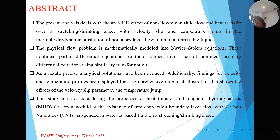This is the abstract. In the abstract, what we present in the current work is the MHD effect of non-Newtonian fluid flow and heat transfer over a stretching and shrinking sheet with velocity slip and temperature jump in the thermodynamic attribution of the boundary layer. We solve the problem using a similarity variable, converting partial differential equations to ordinary differential equations, and analyze results analytically using mathematical methods, finding velocity and temperature profiles represented in graphical illustrations. The aim is to consider the properties of heat transfer and MHD Casson non-Newtonian fluid at the free convective boundary layer flow using carbon nanotubes.